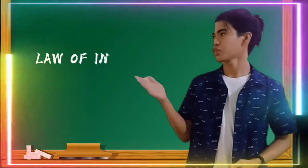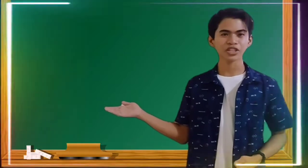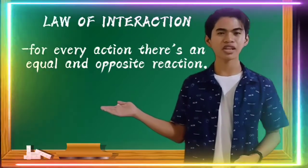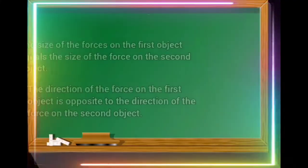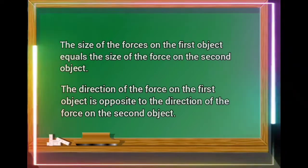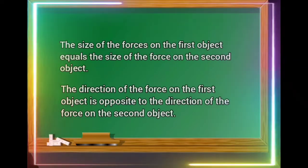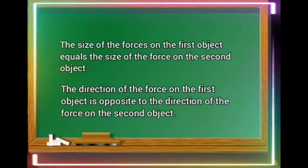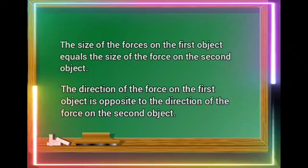So what is the law of interaction? The law of interaction states that for every action there is an equal and opposite reaction. The size of the forces on the first object equals the size of the force on the second object. The direction of the force on the first object is opposite to the direction of the force on the second object.